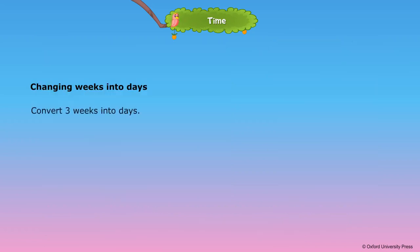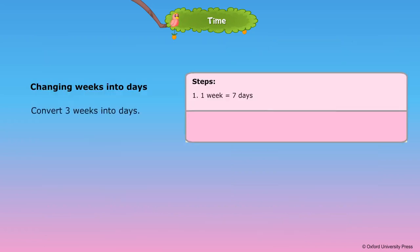Changing weeks into days. Steps. 1 week is equal to 7 days. 3 weeks is equal to 3 into 7, that's equal to 21 days.